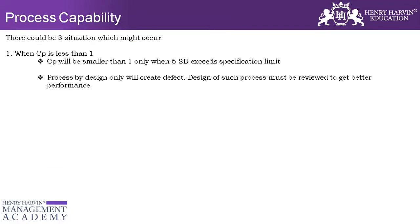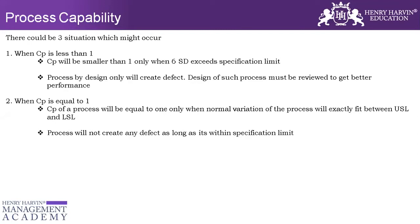So now there are three conditions that can happen in CP. When do we call CP less than one? CP will be smaller than one when the process by design will only create defects — which means the specification limit defined by the customer is outside the normal distribution, outside the six sigma. Then CP is less than one. When do we call CP equal to one? When the normal variation of the process will exactly fit between USL and LSL. In that case, the process will not create any defects as of now because it's fitting just on the specification.